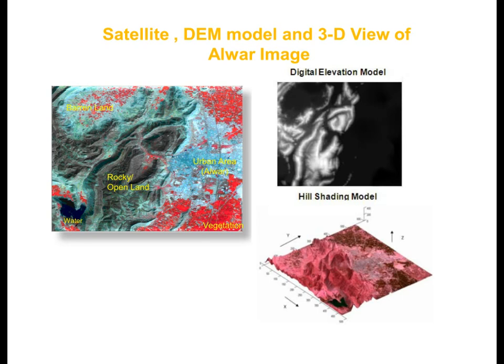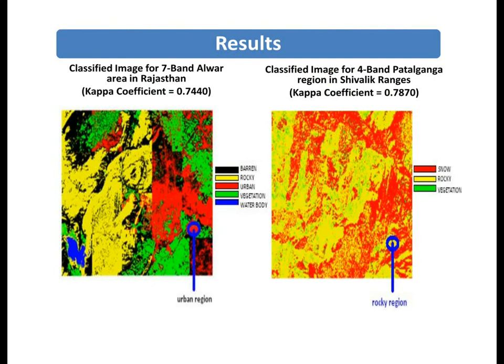These are the images of the Alva region in Rajasthan. The first one is the satellite image of Alva with broadly categorized land use types, the second is the digital elevation model, and the third is the 3D view or the hill shading model of the Alva image.